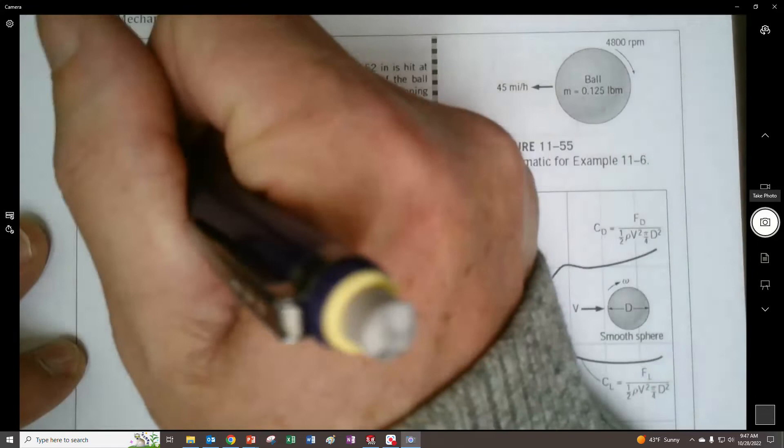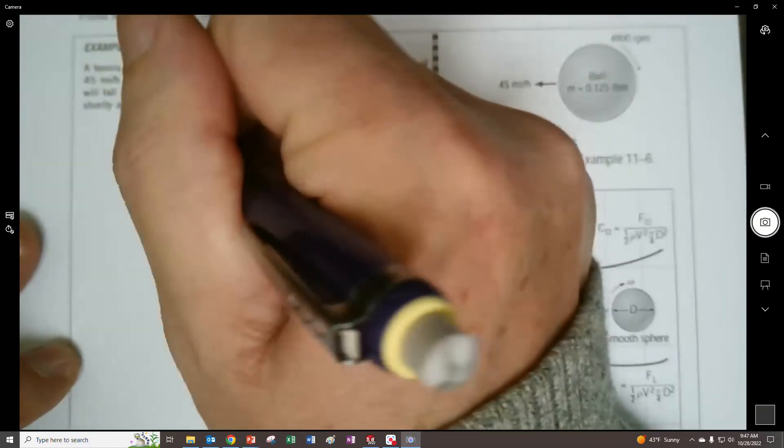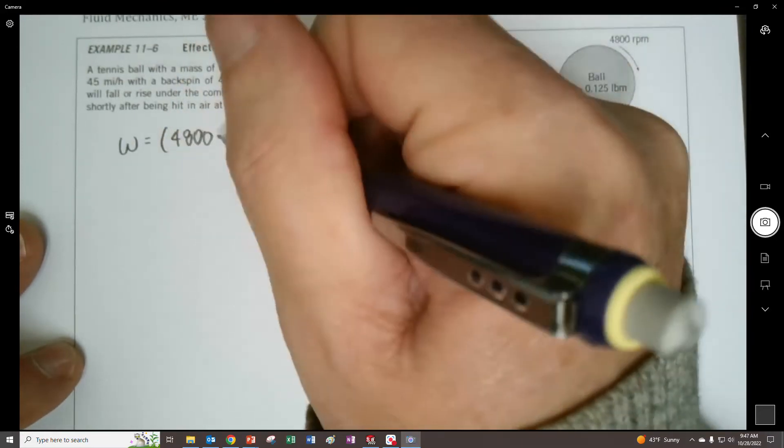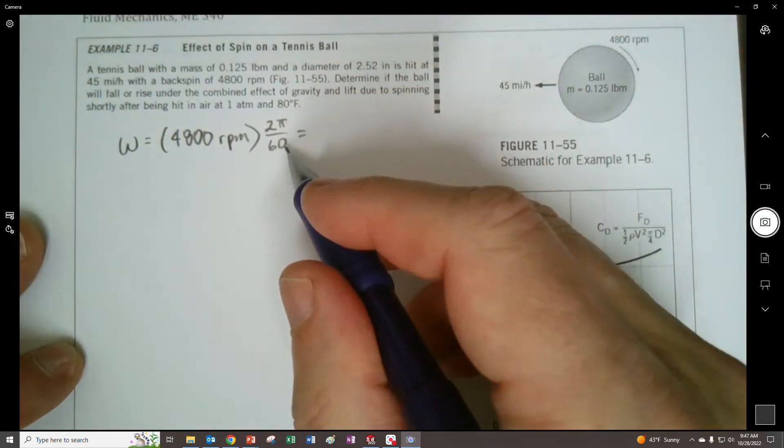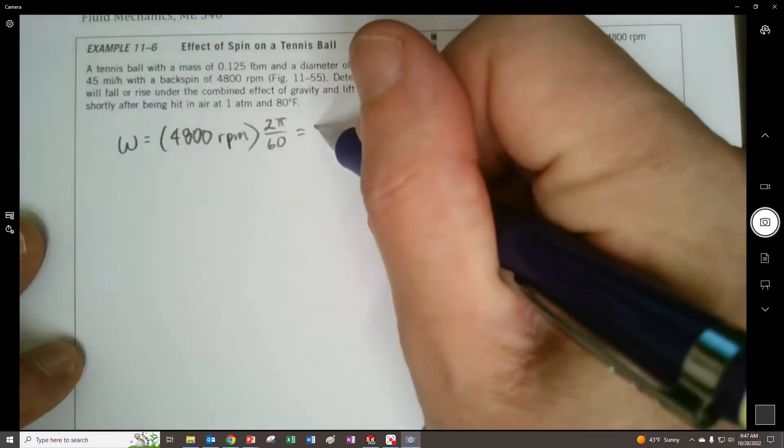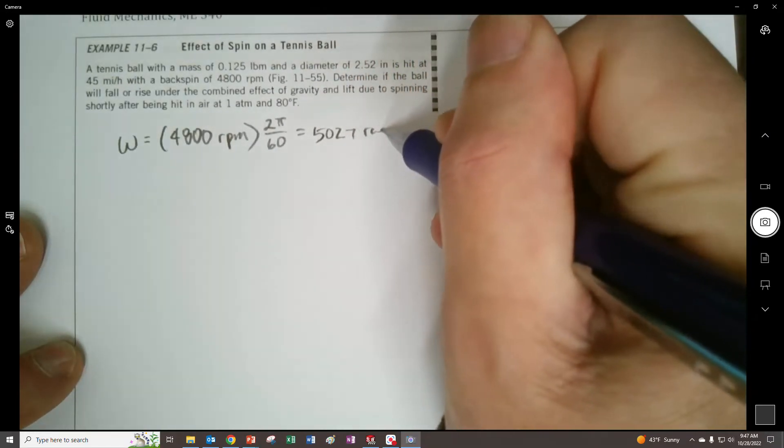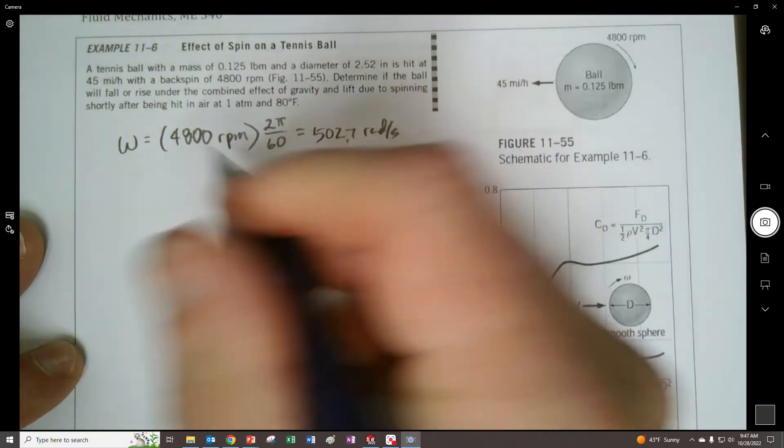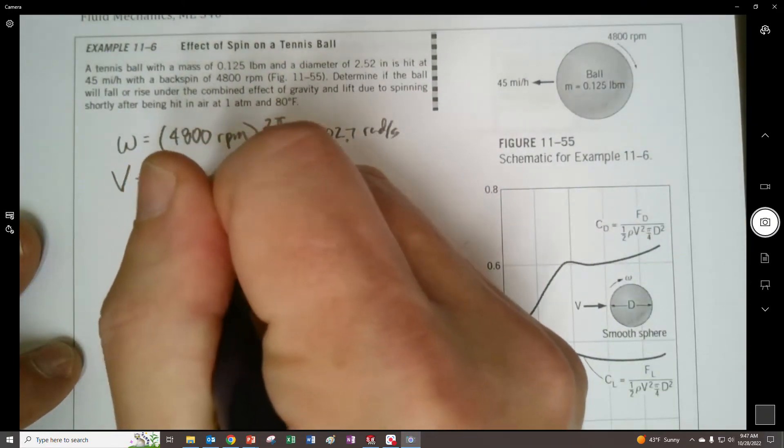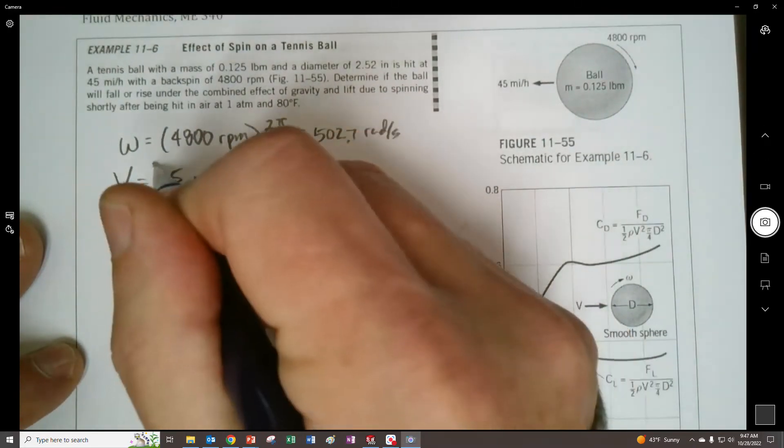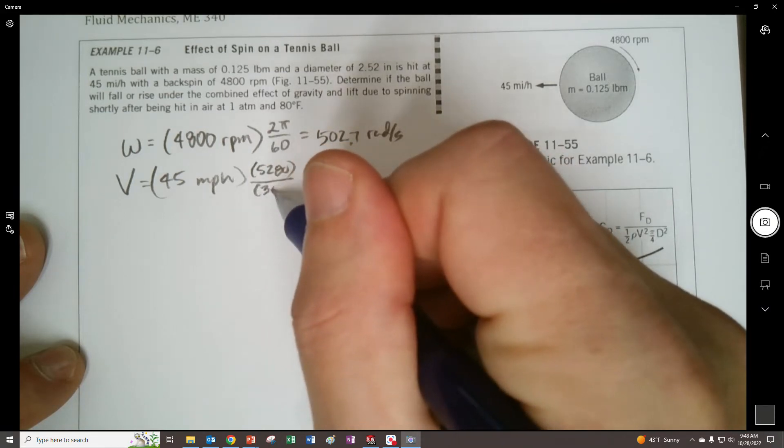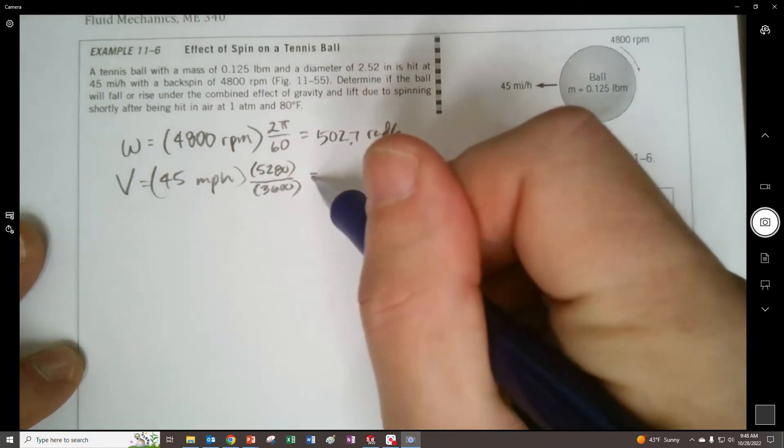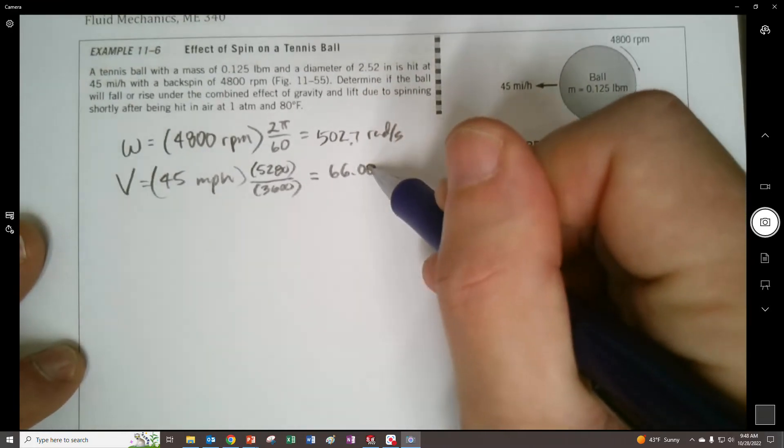First things first, I'm going to turn this 4,800 RPM into radians per second, so multiply by 2 pi radians per revolution, divide by 60 seconds per minute, and get 502.7 radians per second. Then turn the speed from 45 miles per hour, multiply by 5280 feet per mile, divide by 3600 seconds per hour, and get 66 feet per second.